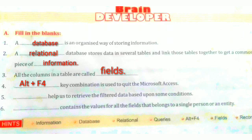Fifth question: dash helps us to retrieve the filtered data based upon some conditions. If we need to access data based on certain conditions, what do we use? We use queries. Queries are used to get filtered data based on a condition.